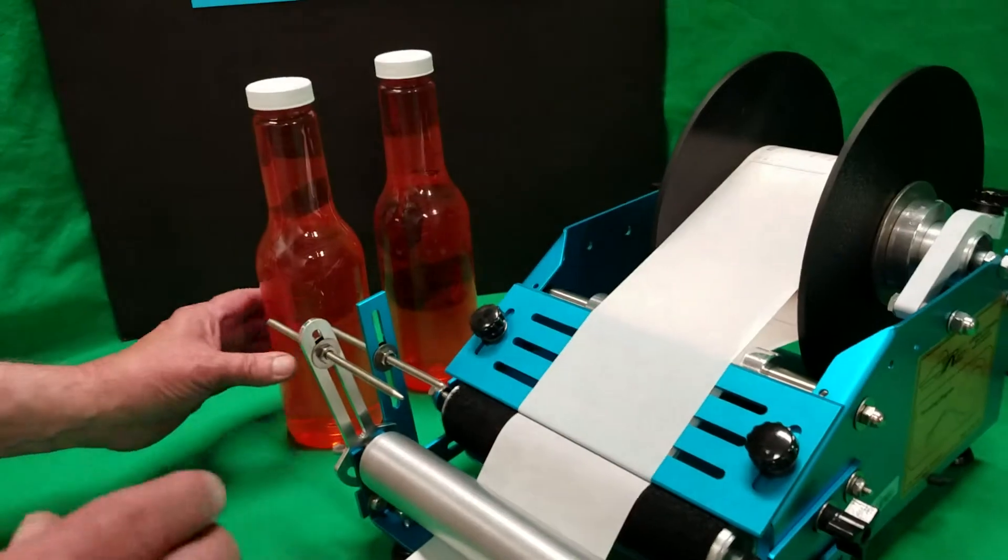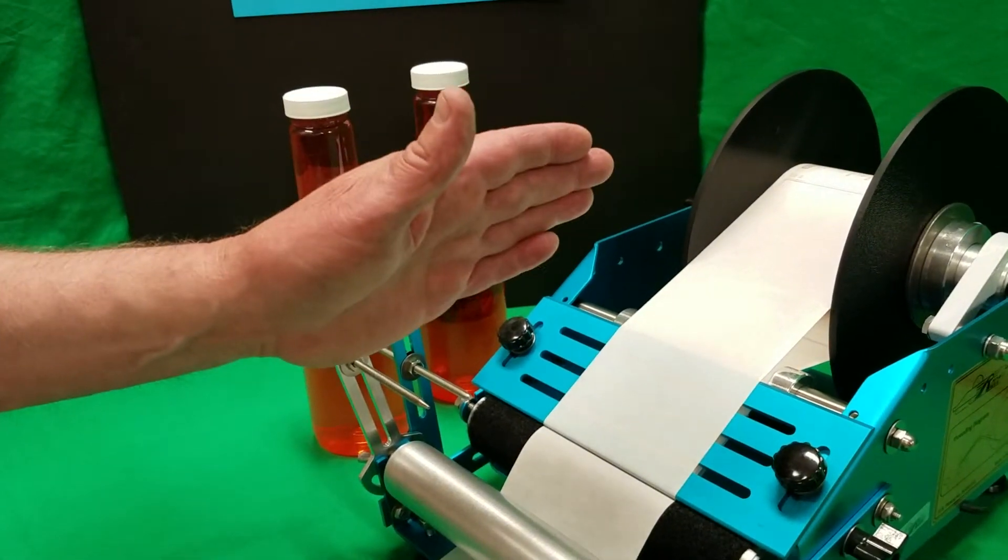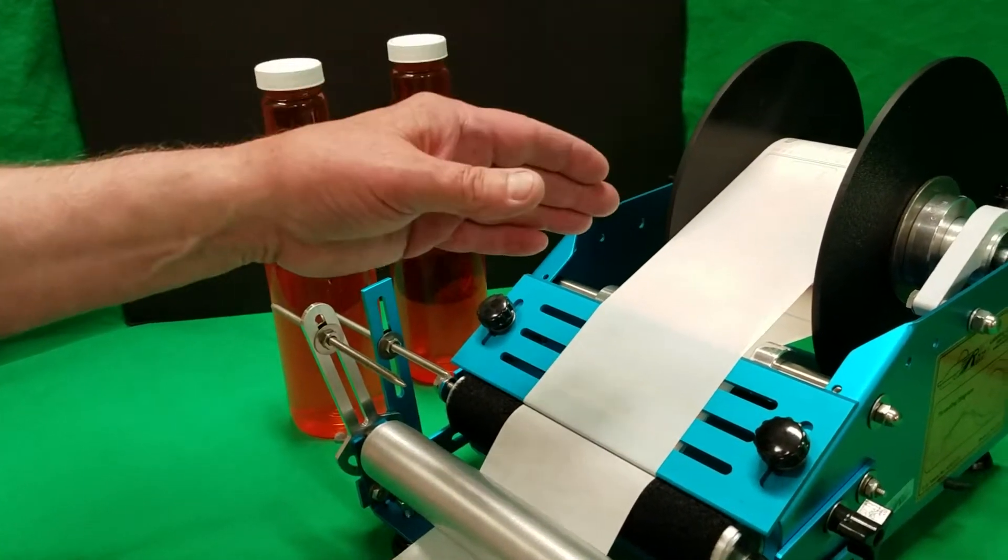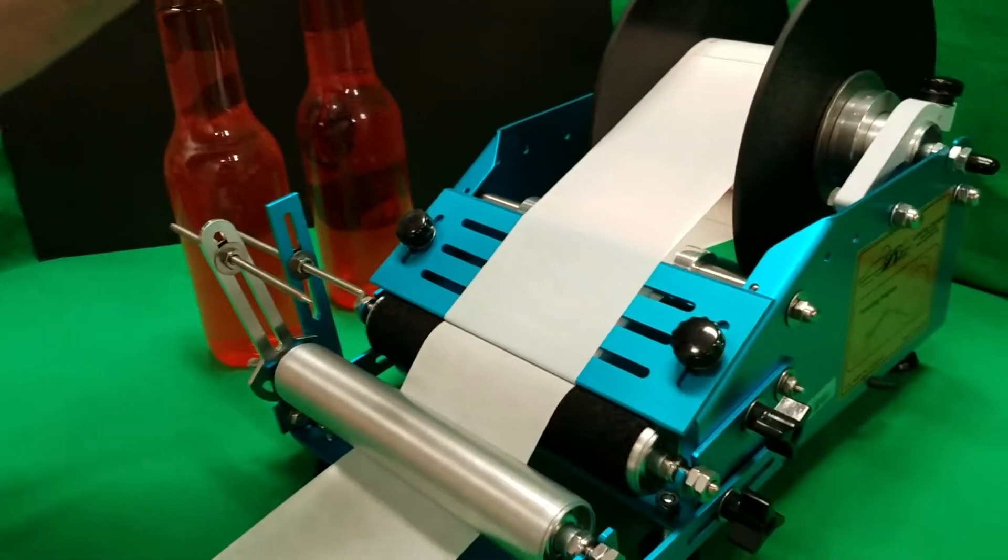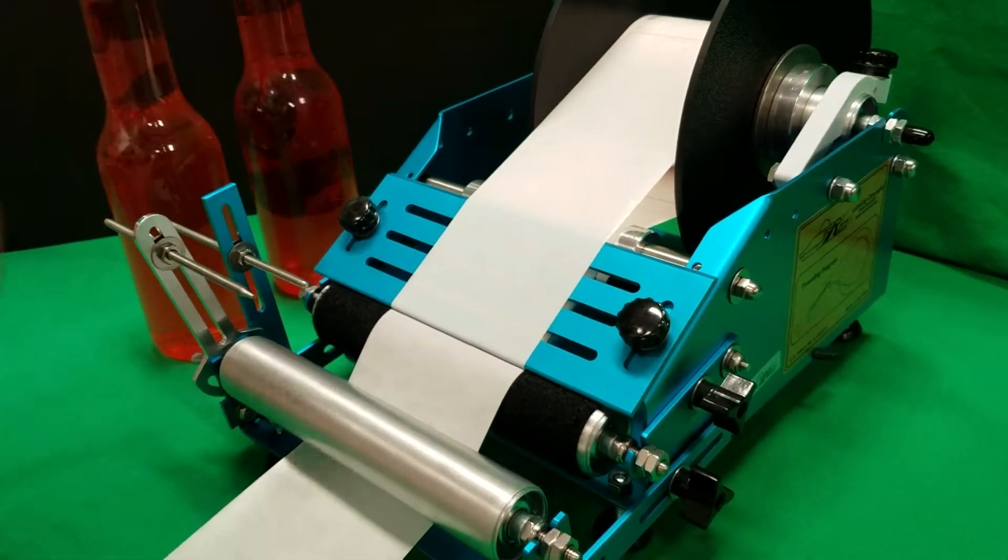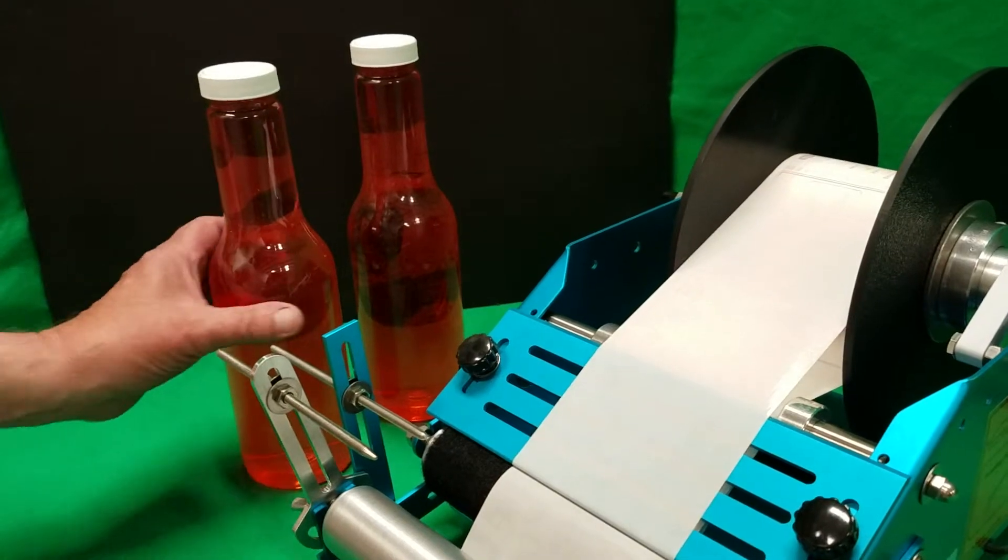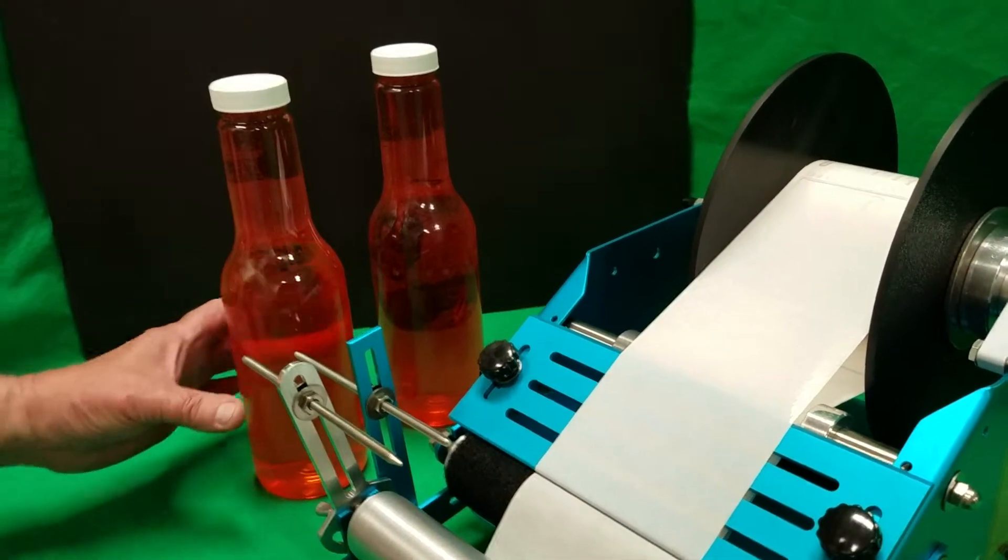To work the gap guide, there's only one eighth of an inch gap between the labels, the front and back labels, on the roll of labels. But we're going to need a gap that is even on both sides of the bottle.